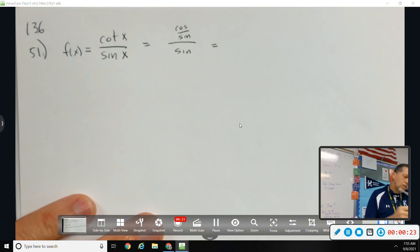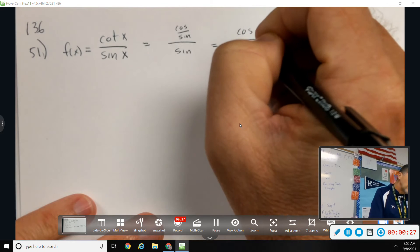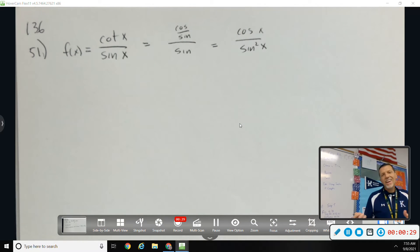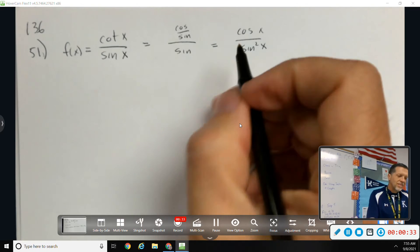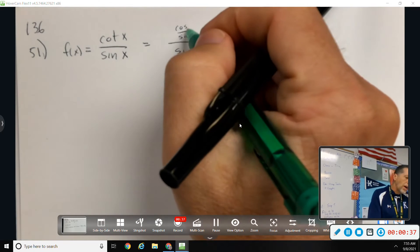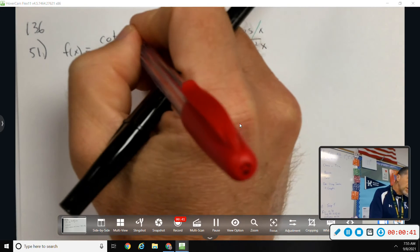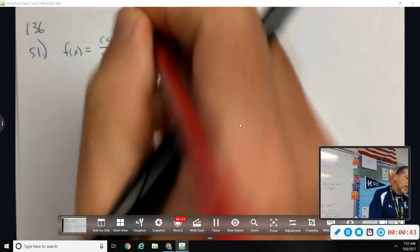So you could rewrite that as cosine over sine squared. You're still dealing with the quotient rule, so I don't think that's going to be helpful. I think we back up and say, let's just call the top F and the bottom G and go with that.